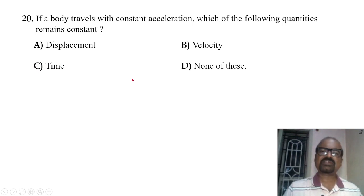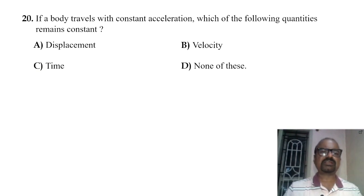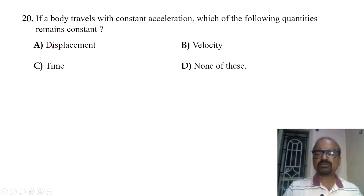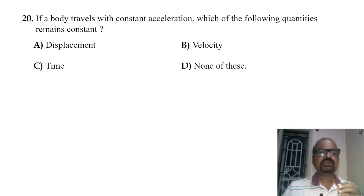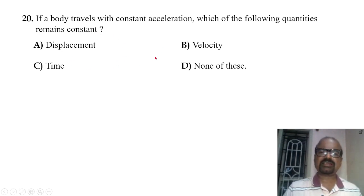If a body travels with constant acceleration, which quantity remains constant? When acceleration is constant, displacement increases and velocity changes with time. Velocity is not constant, displacement is not constant — so the answer is: none of these quantities (other than acceleration itself) remain constant.